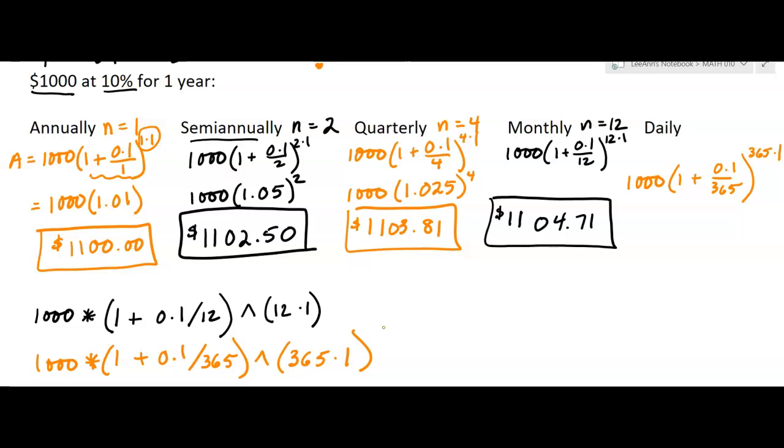So let's put this in the calculator and see how much money we make. Calculators work differently, so you're going to have to play along with some of these to learn how your calculator works. I put in 1,000 times parenthesis, one plus 0.1 divided by 365, close that parenthesis – these parentheses are really important – to the power of 365. Let's see what we get.